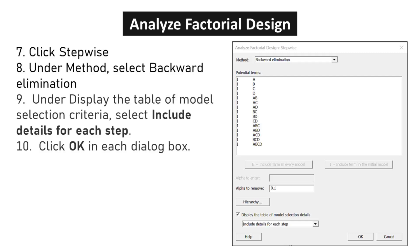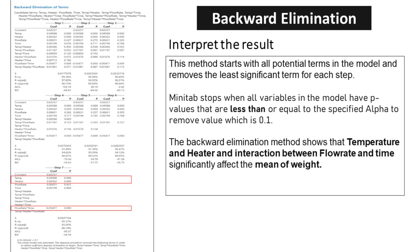Click Stepwise. Under Method, select Backward Elimination. Under Display the Table of Model Selection Criteria, select Include Details for each step. Click OK in each dialog box. The backward elimination method begins with all potential terms in the model and systematically removes the least significant term at each step. Minitab stops the elimination process when all variables in the model have p-values less than or equal to the specified threshold, known as the alpha-to-remove value.